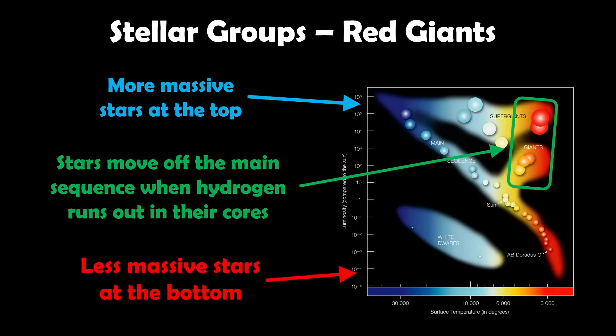The reason why they do that is they cool down, so the surface temperature decreases, which means they go to the right. But also they swell up in size because the way they generate energy internally changes. They generate a greater outward rate of pressure, which makes them swell up, so they get bigger. And if you remember the luminosity equation, a bigger radius means they get more luminous. So they get cooler and more luminous at the same time, which is why you have that branch to the upper right, red giants.